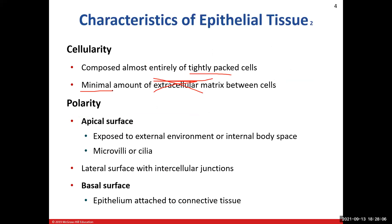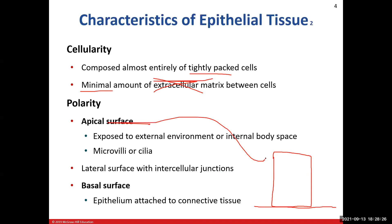The next characteristic is polarity — we talked about this in lab, about the top and bottom of the cell. I like to use the example of a columnar cell, which is taller than it is wide. On the bottom, it sits in the basement membrane — that's the basal surface. The top portion is the apical surface. And on the side, where it connects to other cells, that's the lateral surface.